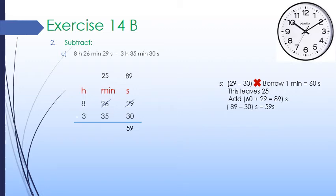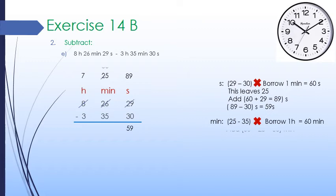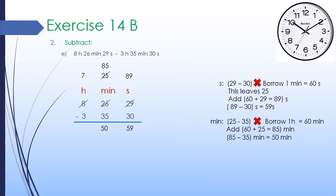In the minute column, we have to subtract 35 minutes from 25 minutes, which is not possible. So we borrow 1 hour from the hour column, leaving 7 hours. Since 1 hour equals 60 minutes, we add 60 minutes and 25 minutes to get 85 minutes. We subtract 35 minutes from 85 minutes, which gives us 50 minutes. We write 50 minutes under the minute column.